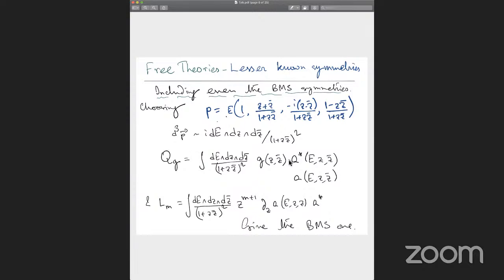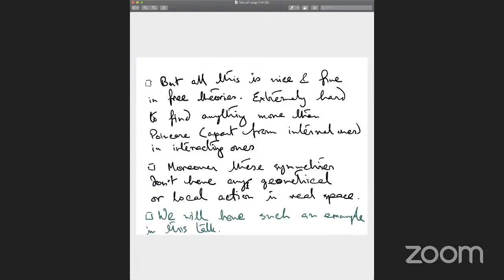I will just exemplify this for newer excitations in the last decade that these include the BMS algebra as well. For example, if you consider three-dimensional field theory, the scalar field theory, you can construct super translation charges as well as the two-dimensional virals or the two-dimensional spatial planes. But all this is nice and fine. If you have a free field, you can do many things. There's not much of interest from a quantum mechanical perspective.